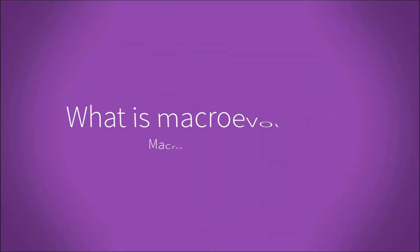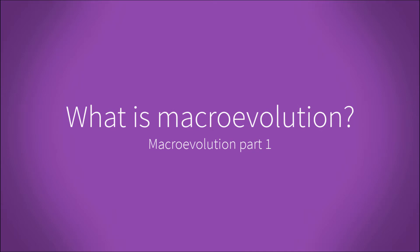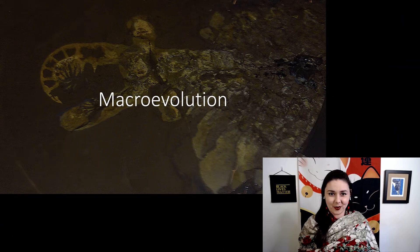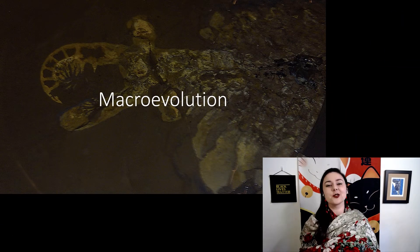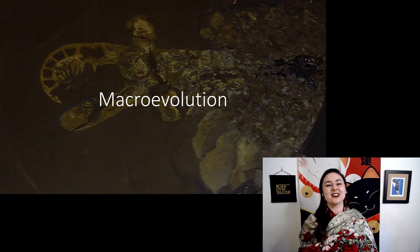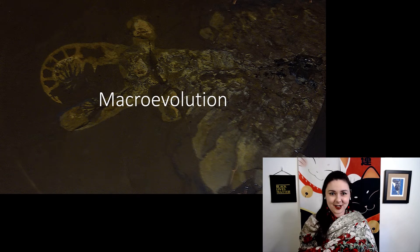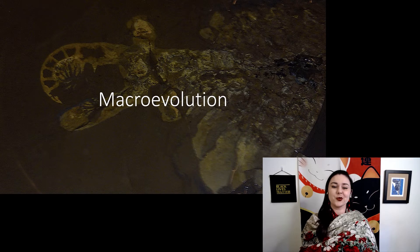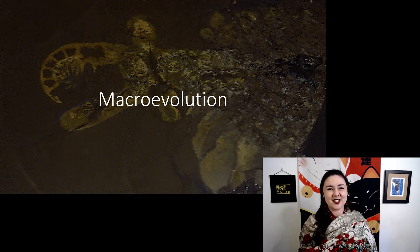We've talked about a lot of different parts of evolution, and especially all of the small parts that help us understand what's going on. But now we're going to talk about the big stuff — macroevolution. This is one of my very favorite fossils. This is Anomalocaris, one of the big predators from the Cambrian explosion. We think this was one of the very first predators, and they were probably fairly successful in their day.